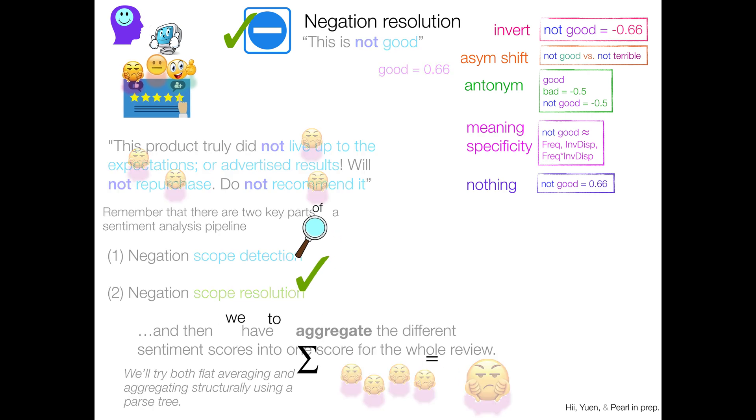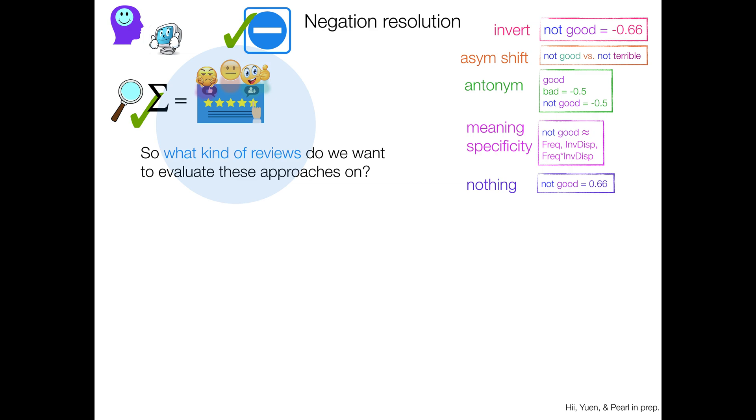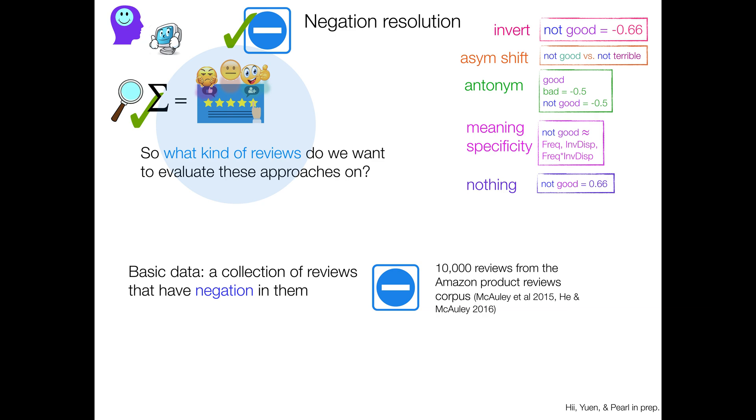And next question, what kind of reviews do we want to evaluate these approaches on? And you're like, well, reviews with negation, of course. True. Basic data is going to be a collection of reviews that just have negation in them. So we have 10,000 reviews that we grabbed from the Amazon product reviews corpus that have negation in them.